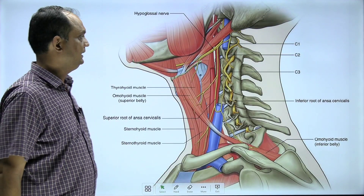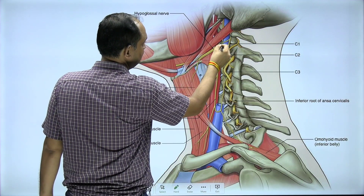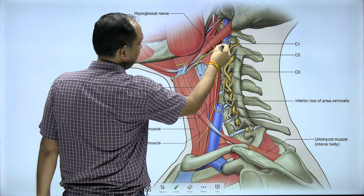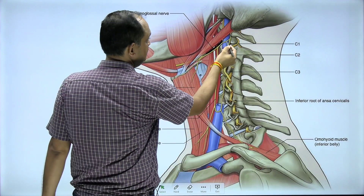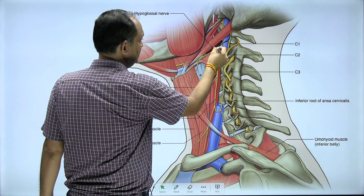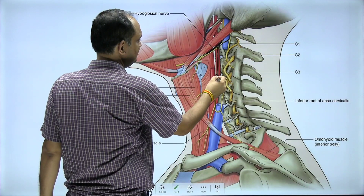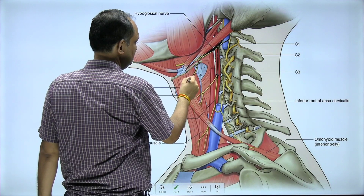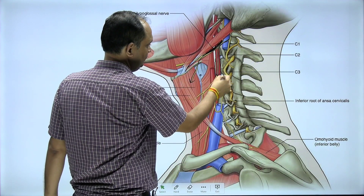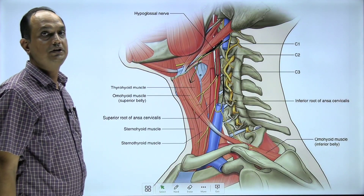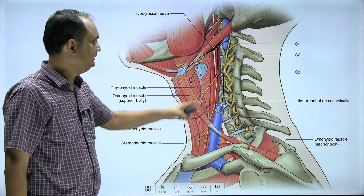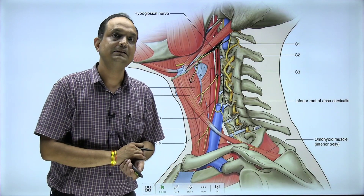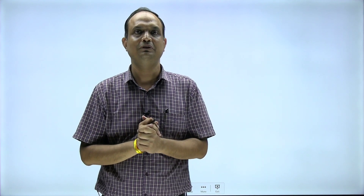To appreciate the formation once more: the hypoglossal nerve carries fibers of C1 within its sheath. These C1 fibers leave at different places — one way is the superior root, and another way is the branch to the thyrohyoid muscle. The inferior root runs on the anterior wall of the carotid sheath, particularly on the internal jugular vein side, and both roots join together to form the loop of ansa cervicalis. At the end of this class, it is clear what the difference is between the superior and inferior root, the location of ansa cervicalis, and which muscles are supplied by it.